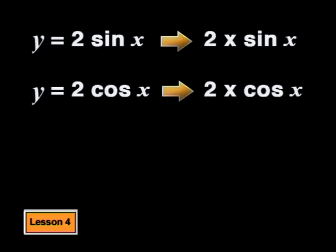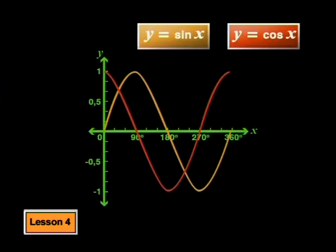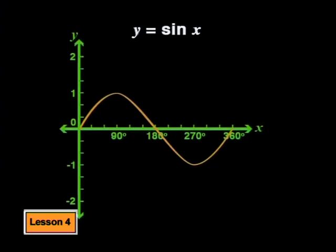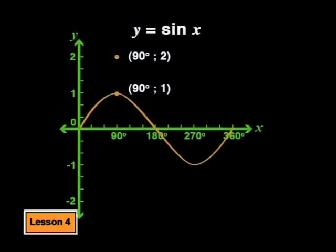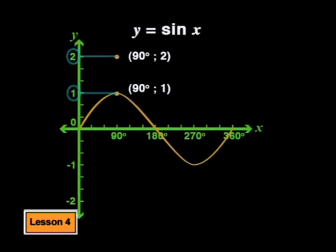By increasing the a value to 2 in the formula, we have changed every y value for the sine and cosine functions by a factor of 2. Each y value on the graphs will be 2 times bigger, so we can multiply them by 2 to find the y values for the new graphs. Starting with the parent sine graph, the point at 90 degrees and 1 — which was the maximum — becomes the point (90, 2). The new point is twice as high above the x-axis as the point on the parent graph.